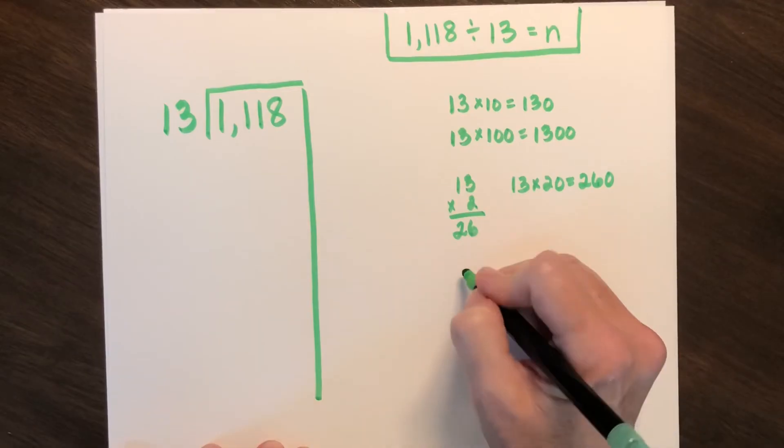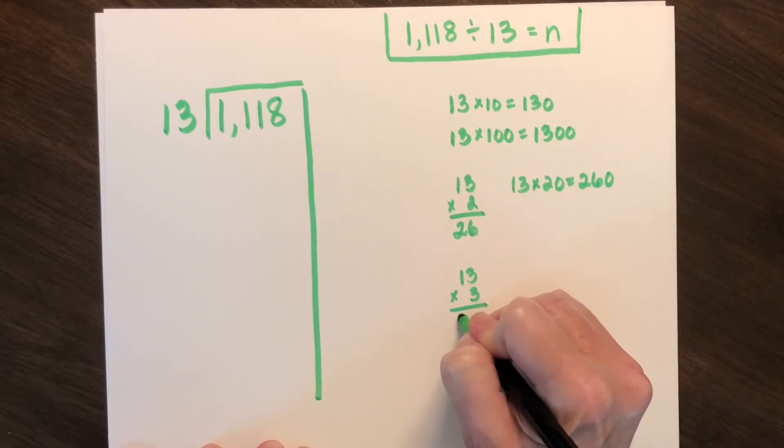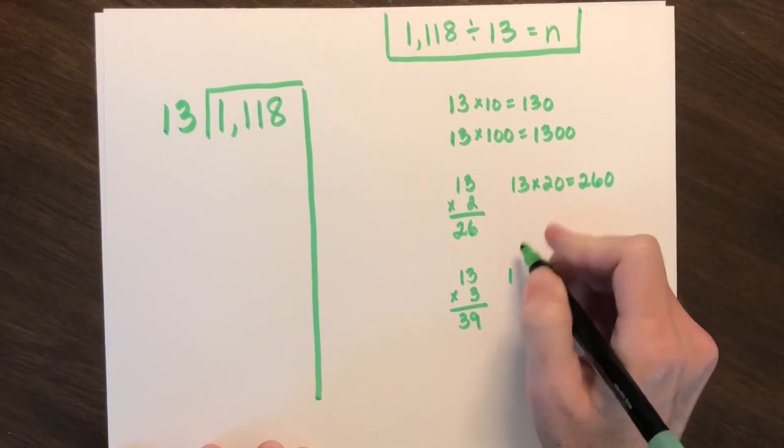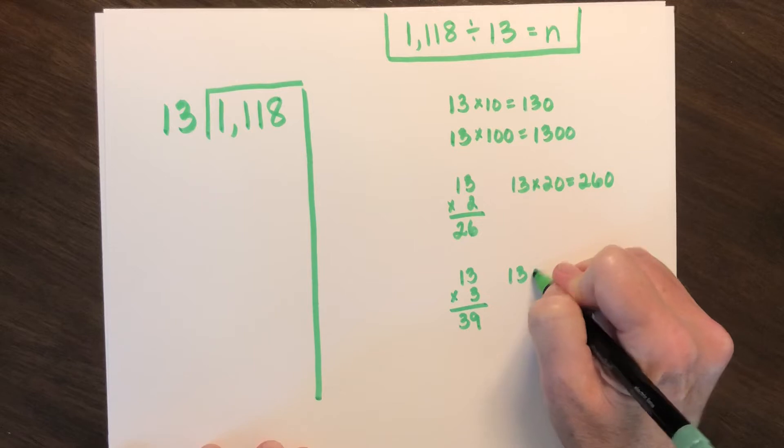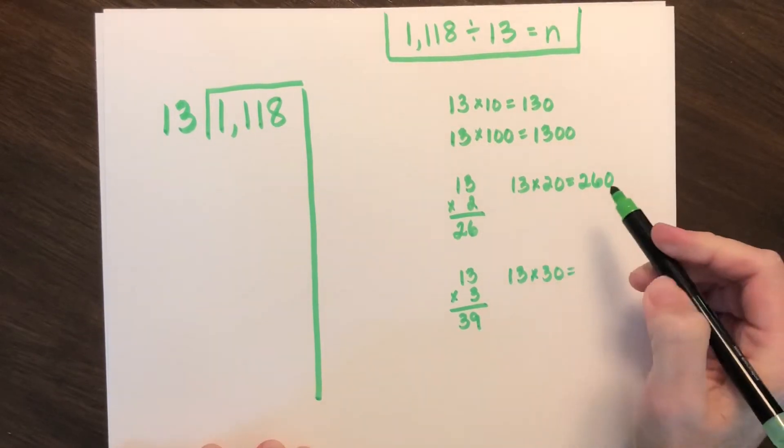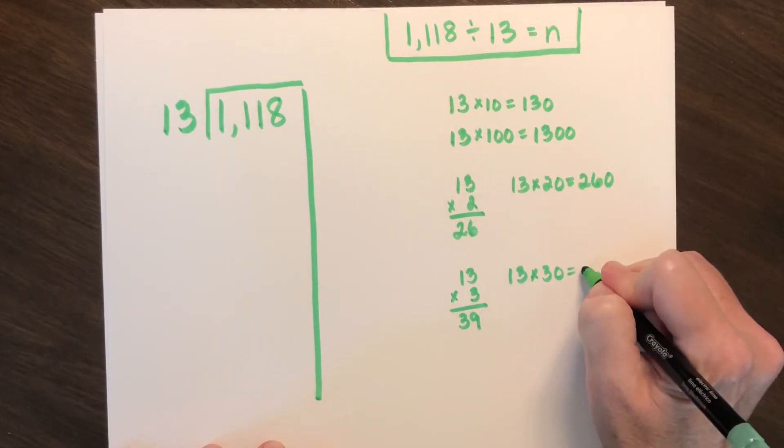I could consider 13 times 3, because I know that is 39. Again, a multiple that I could solve pretty easily for myself. So consider what works for you as a mathematician.